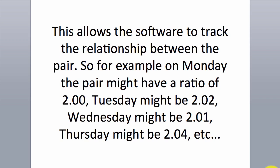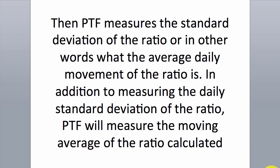This allows the software to track the relationship between the pair. So, for example, on Monday the pair might have a ratio of 2.0, Tuesday might be 2.02, Wednesday might be 2.01, Thursday might be 2.04, and so on.